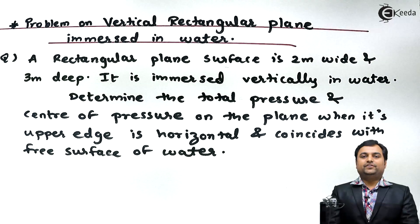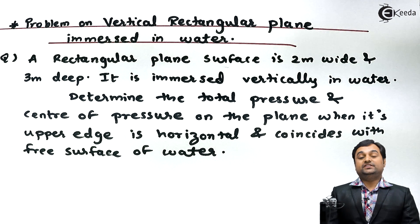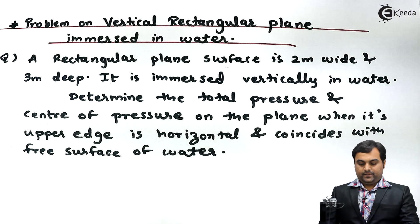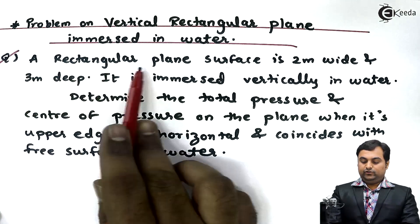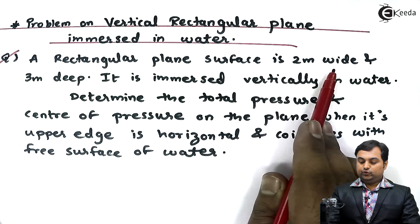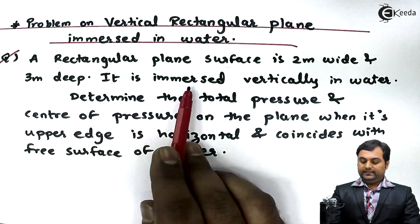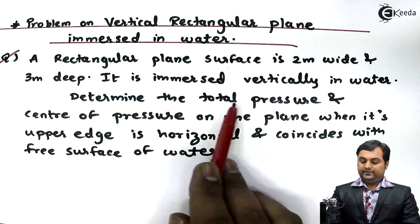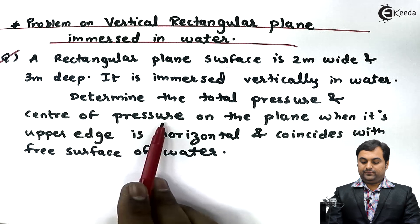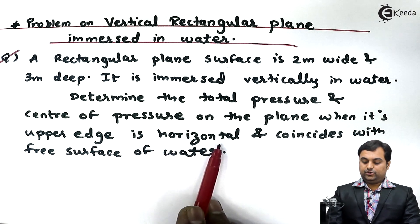Hello friends, here in this video we will take a problem of a vertical plane which is immersed in water. Here we have a question: a rectangular plane surface is 2 meter wide and 3 meter deep. It is immersed vertically in water. Determine the total pressure and center of pressure on the plane when its upper edge is horizontal